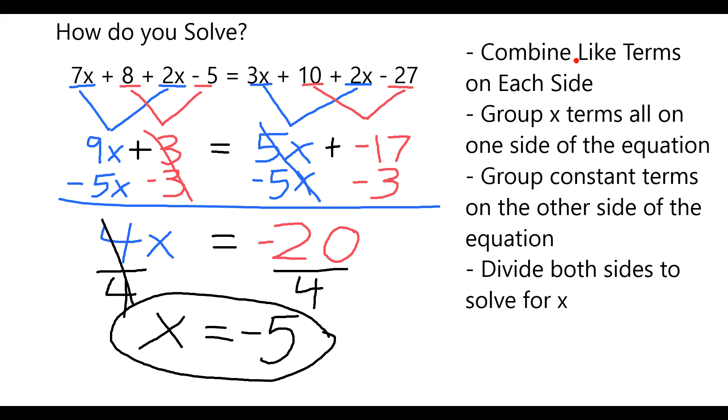Very quickly again, my steps were to combine like terms on each side, get the x terms on one side of the equation, the constant terms on the other, and in this case, my final step was to perform a division on both sides to ultimately get the x by itself.